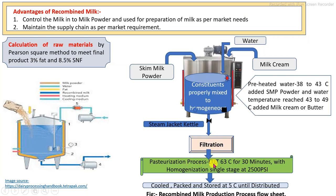Then the mixture passes through filtration operations and then the pasteurization process using a plate heat exchanger, either by low temperature longer time (LTLT) or high temperature short time (HTST), as per the specific equipment. In between the pasteurization process, a single stage homogenization process is carried out, and finally the pasteurized and homogenized recombined milk is cooled and packed into packaging material.